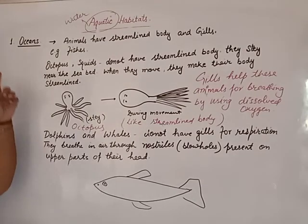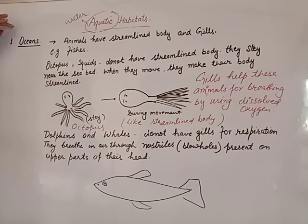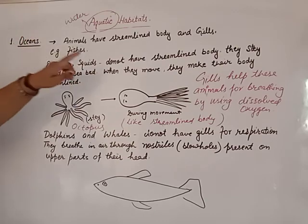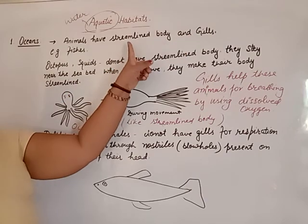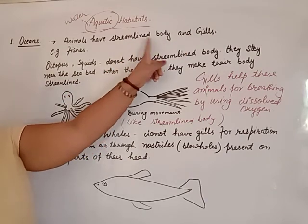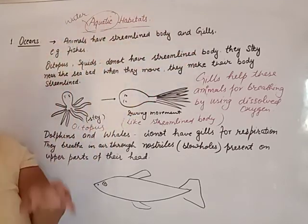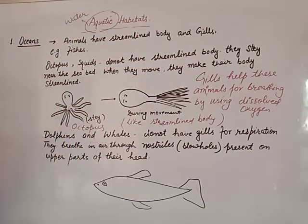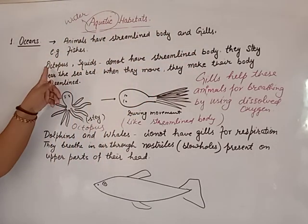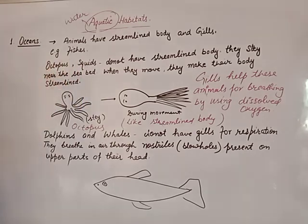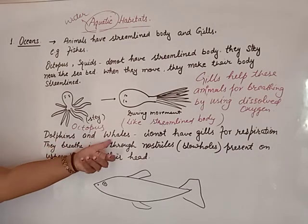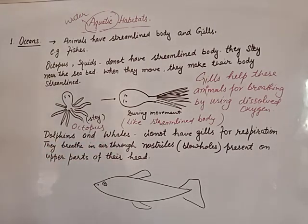This is all about the ocean. Ocean animals have adaptations: streamlined body and gills. Streamlined body helps in free movement in water, and gills help in respiration. But some animals do not have streamlined body — examples are octopus and squid. And some animals do not have gills but their body is streamlined — examples are dolphin and whales. Thank you.